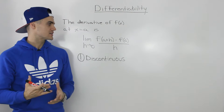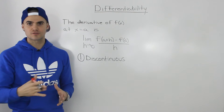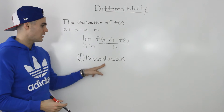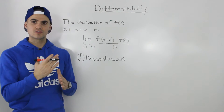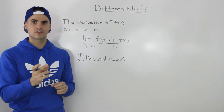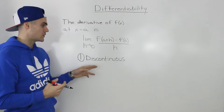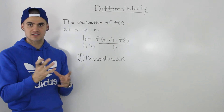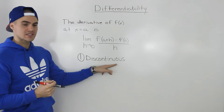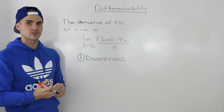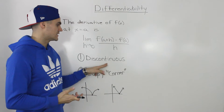There are a couple of cases where a function is not differentiable at a certain point. An obvious case is when it's discontinuous — if at a specific x value there's a vertical tangent, a hole, or a jump discontinuity, then the function is not differentiable at that x value where the discontinuity occurs. So if a function is discontinuous at a certain x value, it's not differentiable there either.